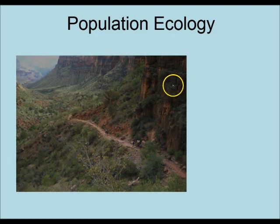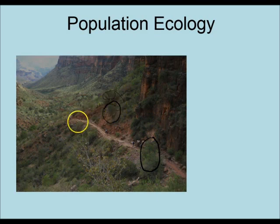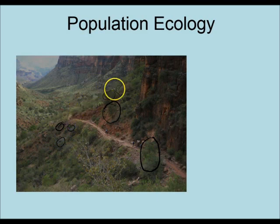Population Ecology deals with the study of a biological population. What is a biological population? Biological populations are groups of animals of the same species that live in the same area. If we look at this picture, we have several different trees that are the same species — this is a population of this species of tree in the Grand Canyon. There are other species of plants, scrub and so forth, and that would be a separate population. So within one ecosystem, you might have several populations.